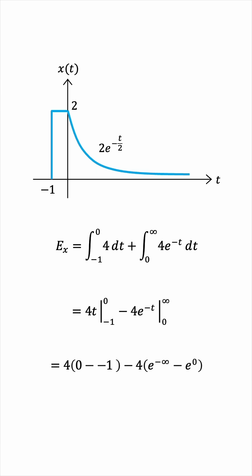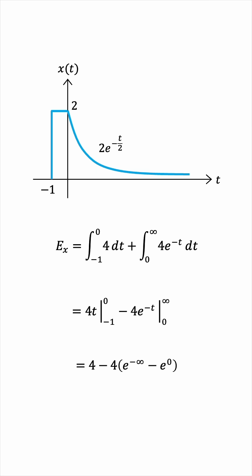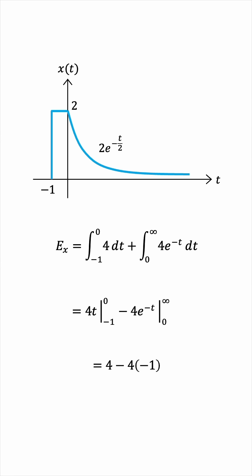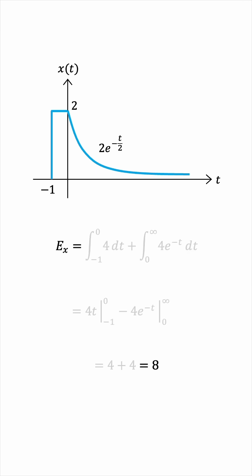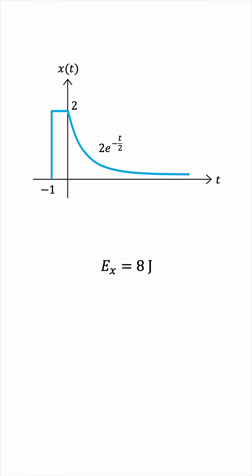We can plug in the bounds, giving us 4 as the first term. E to the 0 is 1, and e to the negative infinity is 0 — or tends to 0, to be precise. And this works out to be 4 plus 4, which is 8. So the energy of the signal x of t shown in the graph is 8 joules. And that's the final answer.